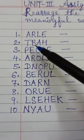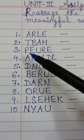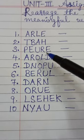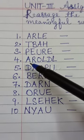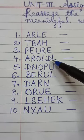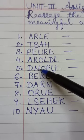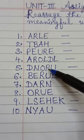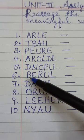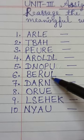Second is T-B-A-H. Third is P-E-U-R-E. Fourth is A-R-O-L-D-L. Fifth is D-N-O-P-U. Sixth is B-E-R-U-L.